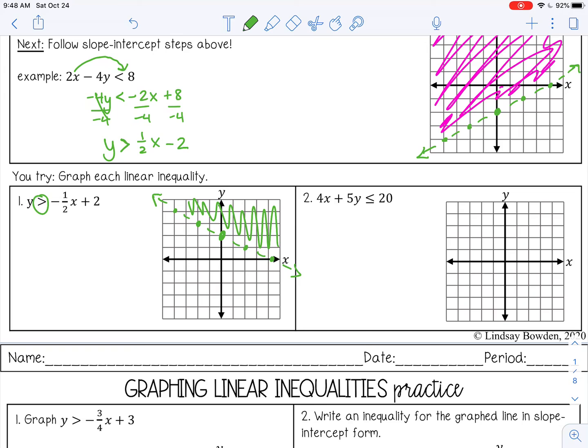For number 2, convert this to slope-intercept form. Move the 4x to the other side by subtracting 4x from both sides so it changes to negative. Then divide by 5. Negative 4-fifths won't reduce. 20 over 5 is 4. I'll plot my y-intercept at 4. Then do rise over run, 4 over 5. This is going to be a solid line because it's less than or equal to. Since it's less than or equal to, I'm going to shade below.